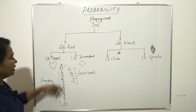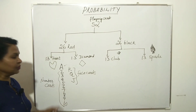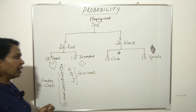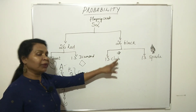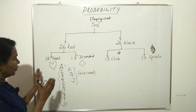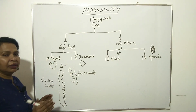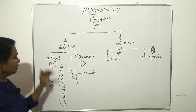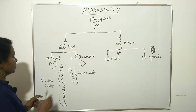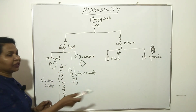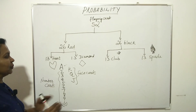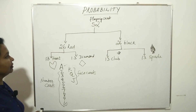If you look at kings in red, there are 2 red kings. In black, there are 2 black kings. So in total there are 4 kings across all suits.